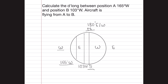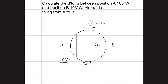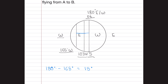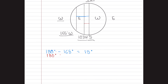And 103 degrees West we plot here as well. Now if we find the difference between 150 degrees to 165 degrees, the answer is 15 degrees. And if we find the difference from 103 degrees to 180 degrees, the answer is 77 degrees.